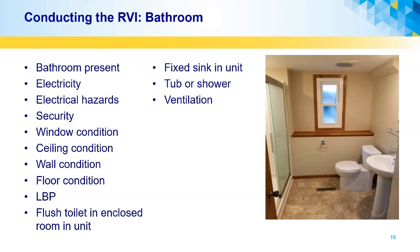Now let's discuss the inspectable items the inspector is concerned about when inspecting the bathroom. Number one: is the bathroom present? Then the electrical requirements — does it have at least one working light fixture? Also, electrical hazards such as exposed wires. Then security, window conditions, ceiling conditions, wall conditions, floor conditions, lead-based paint issues, flush toilet and enclosed room in the unit, fixed sink in the unit, tub or shower, and ventilation.